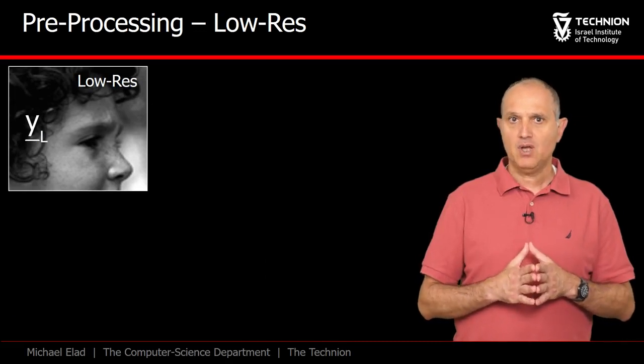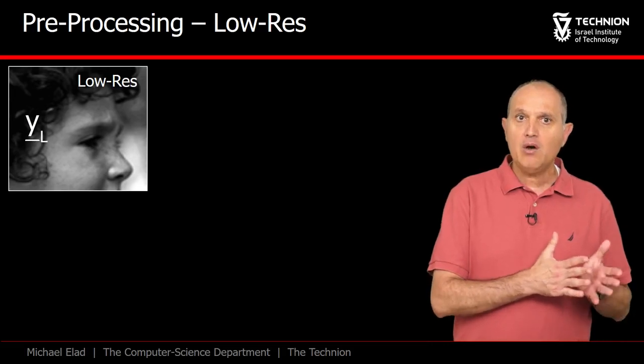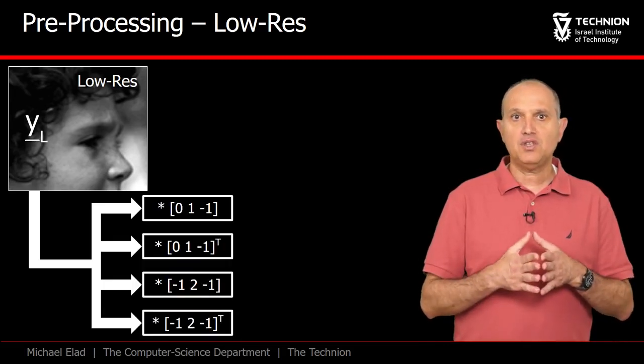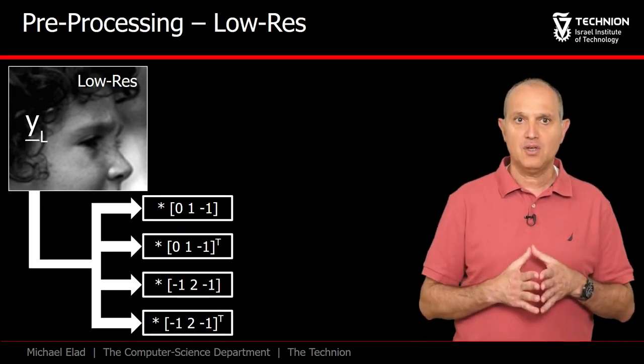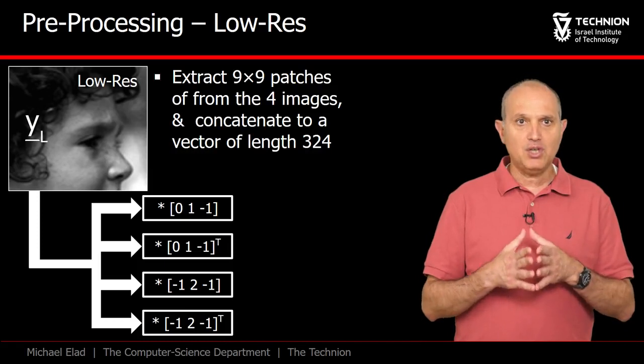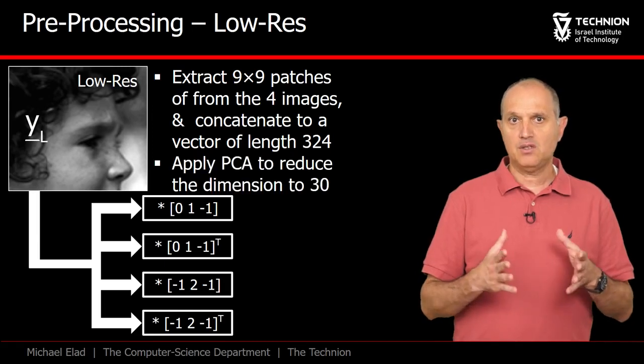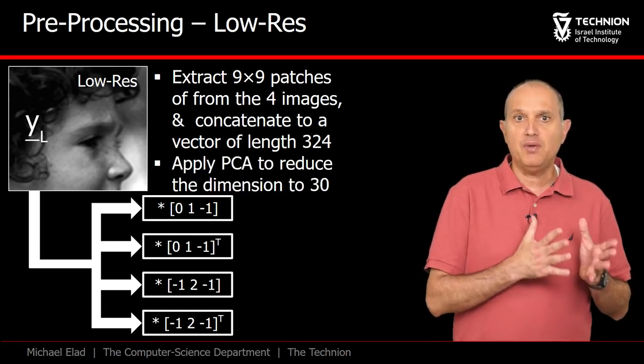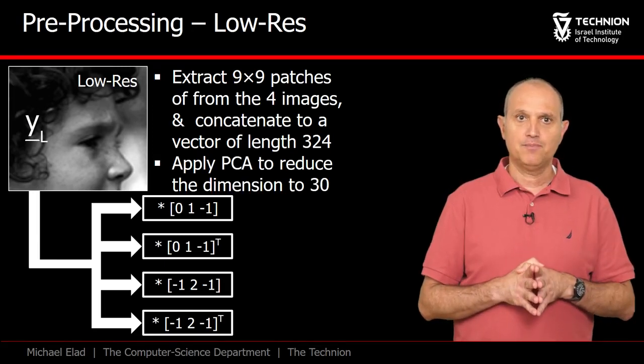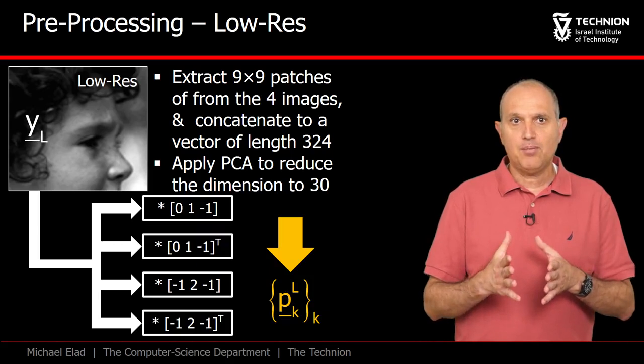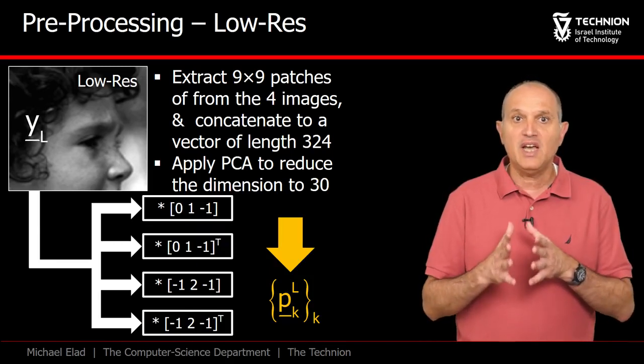In the same spirit, when we are to train DL, we could use the patches taken from YL directly. However, there is a better alternative. We can take this image and apply a set of filters on it, essentially extracting local derivative features. Then we should extract patches from these images and pile them to serve as our low res signals. Since the dimension of the resulting signal is too big and wasteful, we can reduce its dimensionality by applying PCA. In this case, this ended up with vectors of length 30, and these are the low resolution patch features to train DL on.